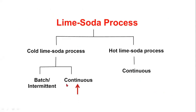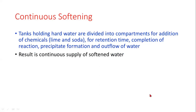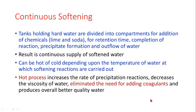In the continuous process, we take hard water and divide it into two compartments. We use lime and soda continuously. The reaction occurs and precipitate forms, resulting in soft water. We continuously supply hard water and obtain soft water. The cold process depends on the temperature of the water, where the reaction is being carried out.